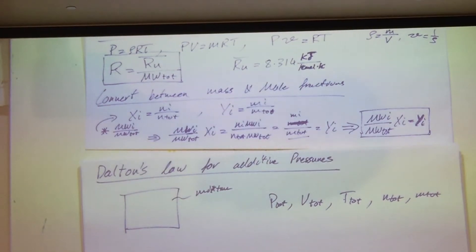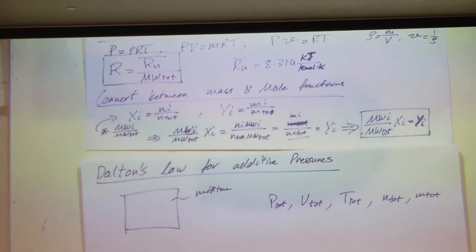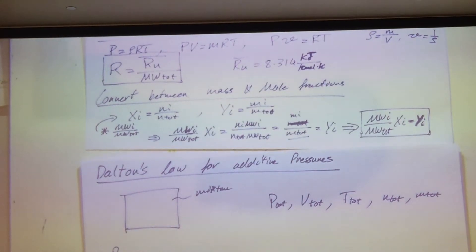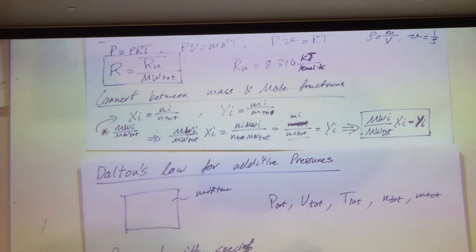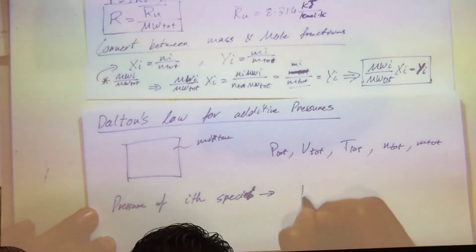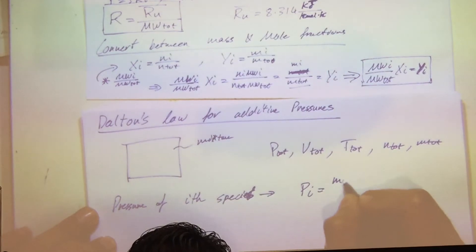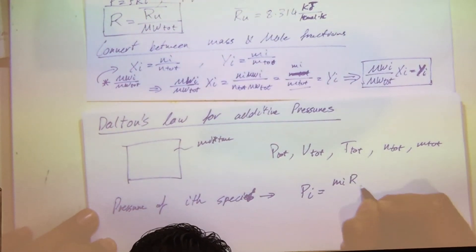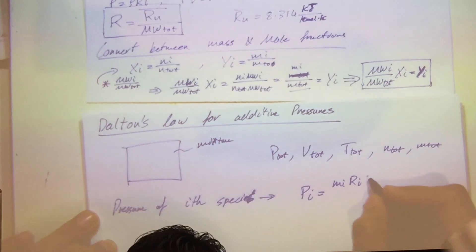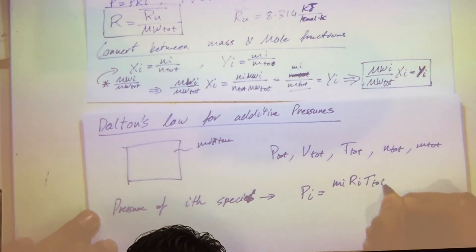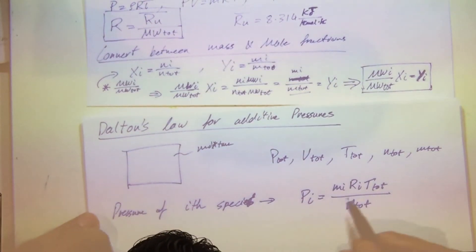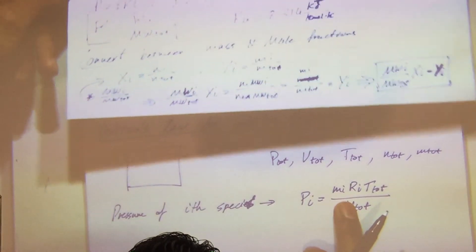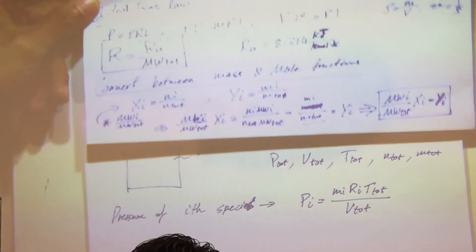And what Dalton's Law says is that the pressure of I species, Pi, is equal to Mi, the gas constant for that species, multiplied by the total temperature divided by V total. I can decompose this further because I already said that, if I just move this slightly here, I already said that I could get it in terms of my universal gas constant and then my total molecular weight.